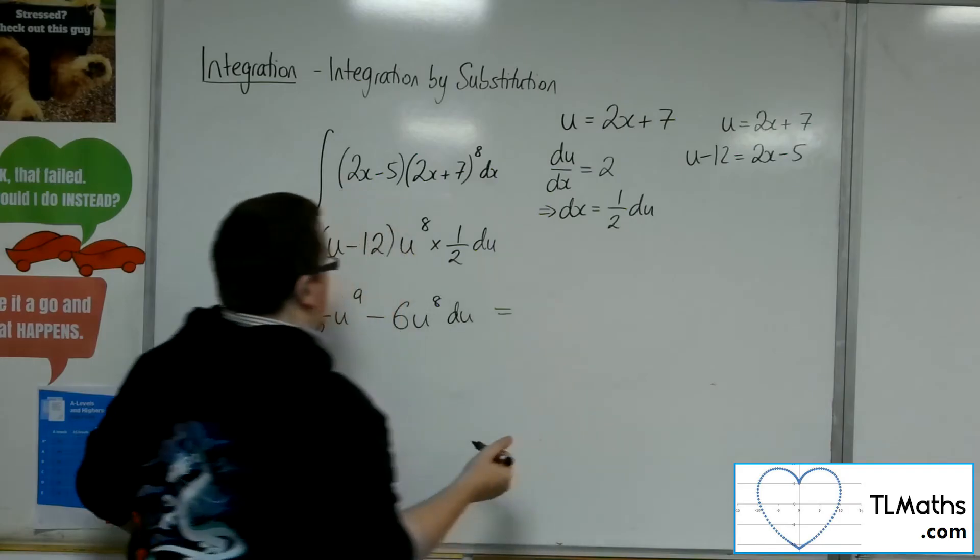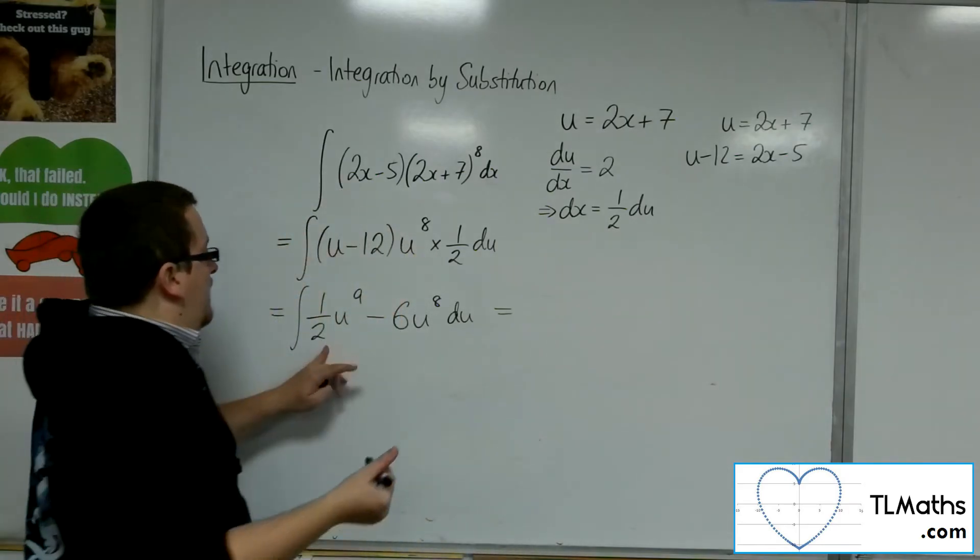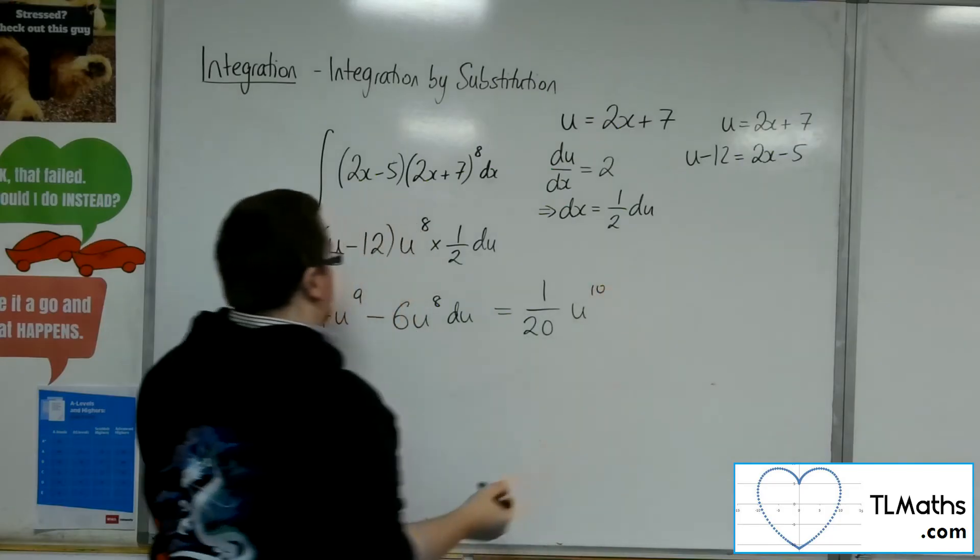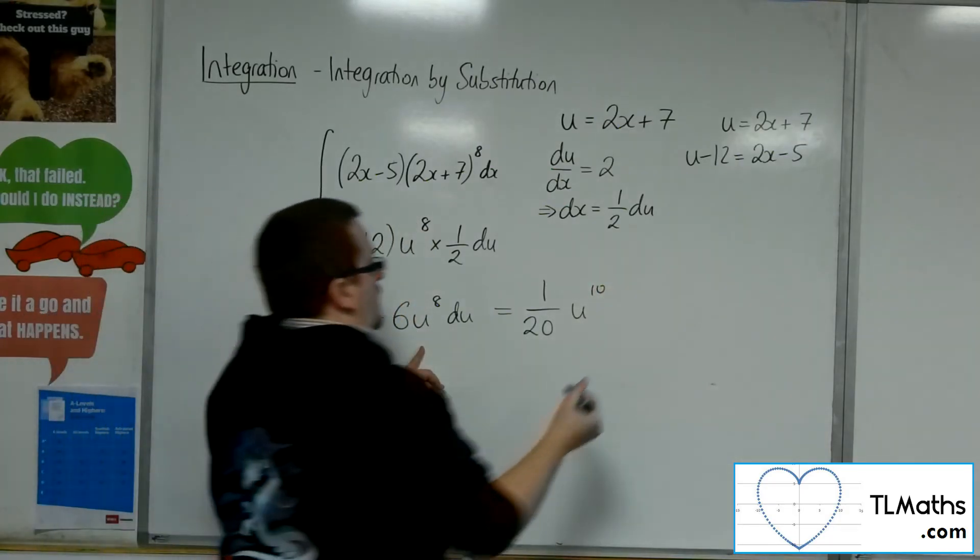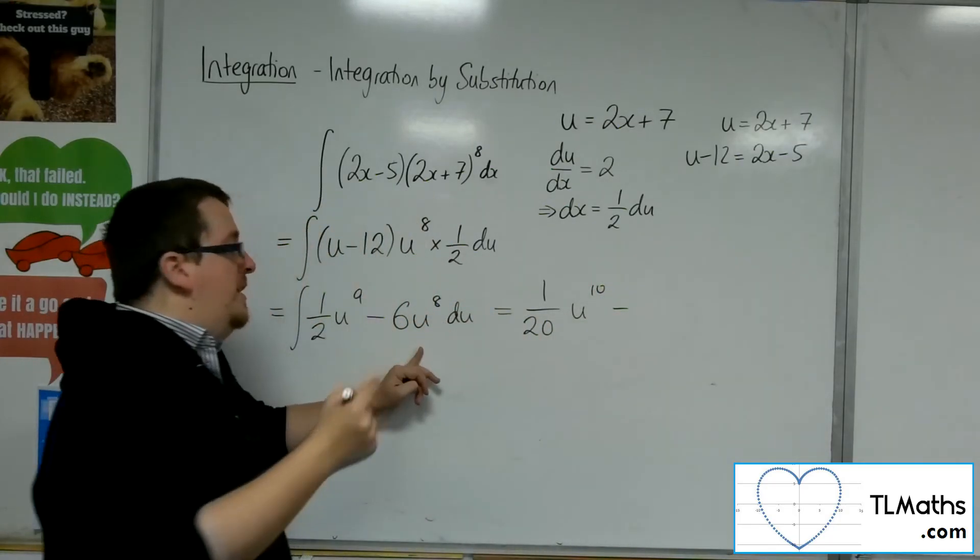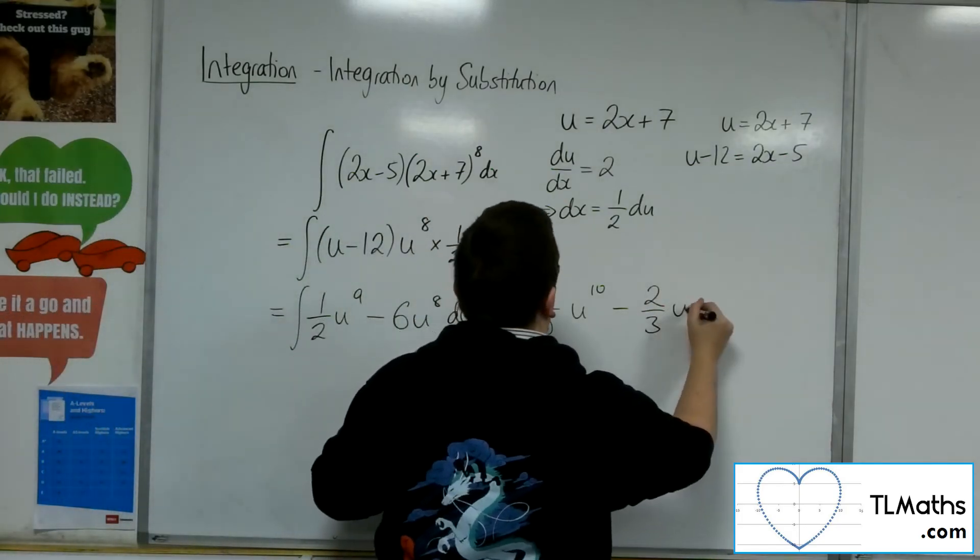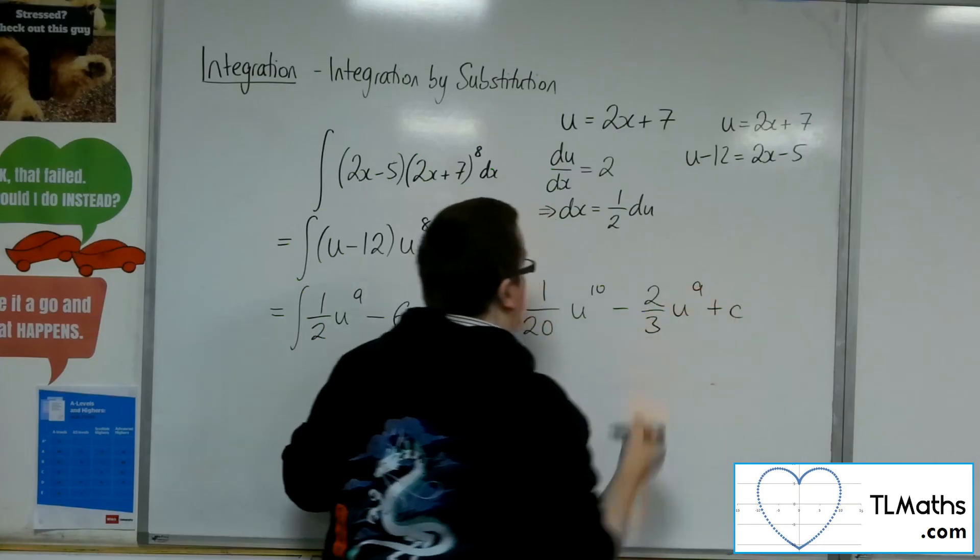We add 1 to the power and divide by the new power, so we get 1/20 u to the power of 10. Then adding 1 to the power gets us to 9, minus 6/9 is minus 2/3 u to the 9, plus c.